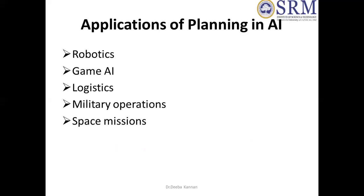The applications of planning in AI include robotics — a robot has to automatically plan its actions. For gaming, based on the human player's move, the AI has to determine its next move. Other applications include logistics, militaries, and space missions — for example, when a satellite is launched, it has to find the way to reach its destination and then observe everything. Even our day-to-day activities and automated systems all require planning. These are all the applications of planning in AI.